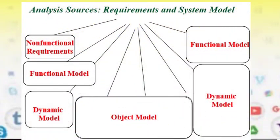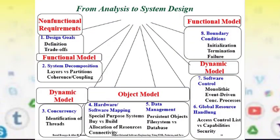We also need to understand the analysis sources about requirements and system models. There are non-functional requirements, functional model, dynamic model, and object model. How do analysis models influence system design? Under non-functional requirements, it maps to design goals. Under the functional model, it maps to system decomposition. Under the dynamic model, it maps to concurrency. Under the object model, it maps to hardware-software mapping and data management. Under the dynamic model, it also maps to software control and global resource handling.